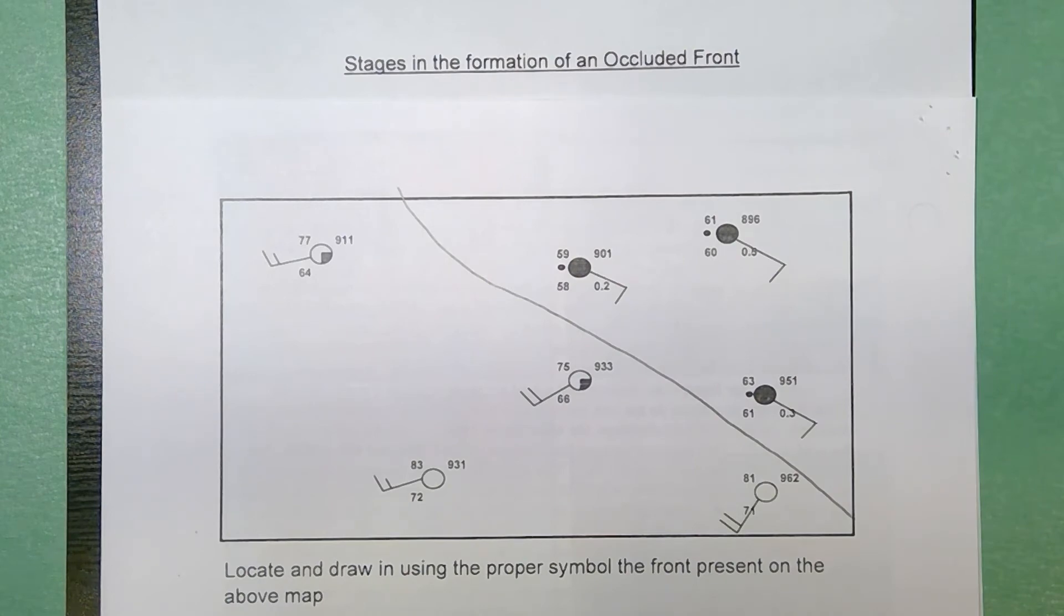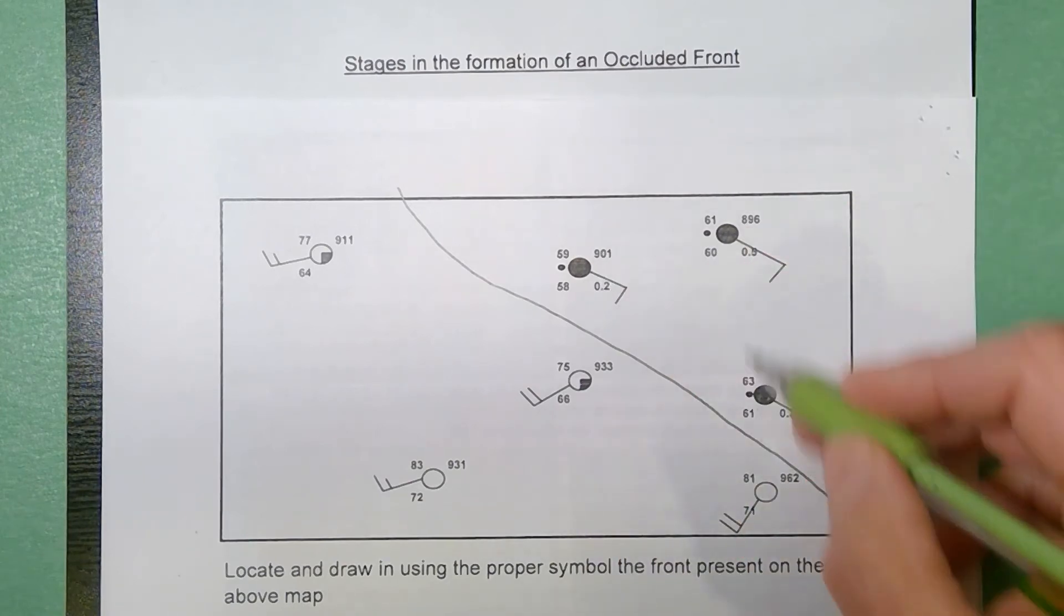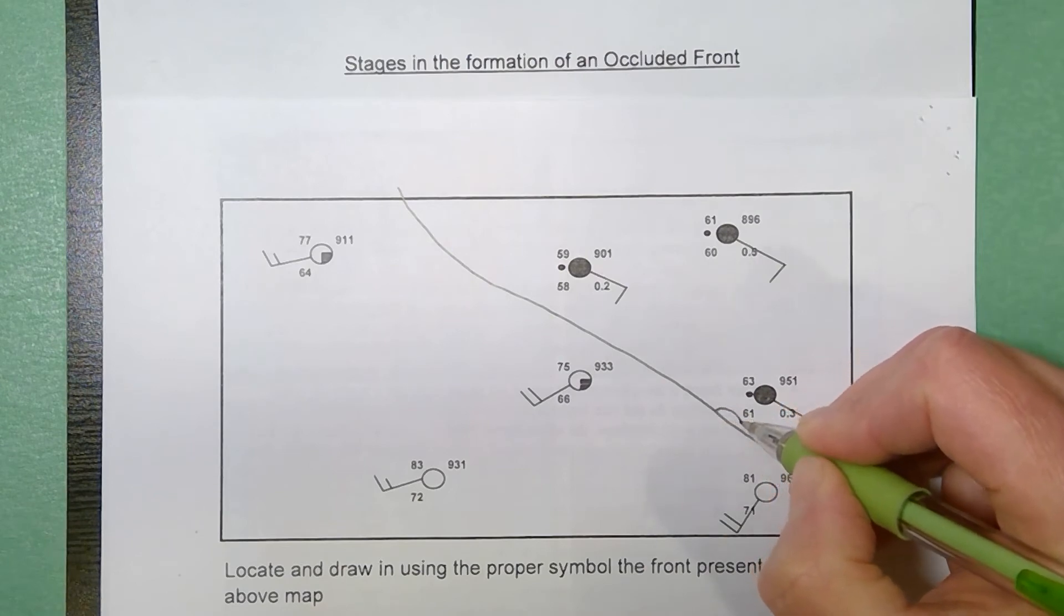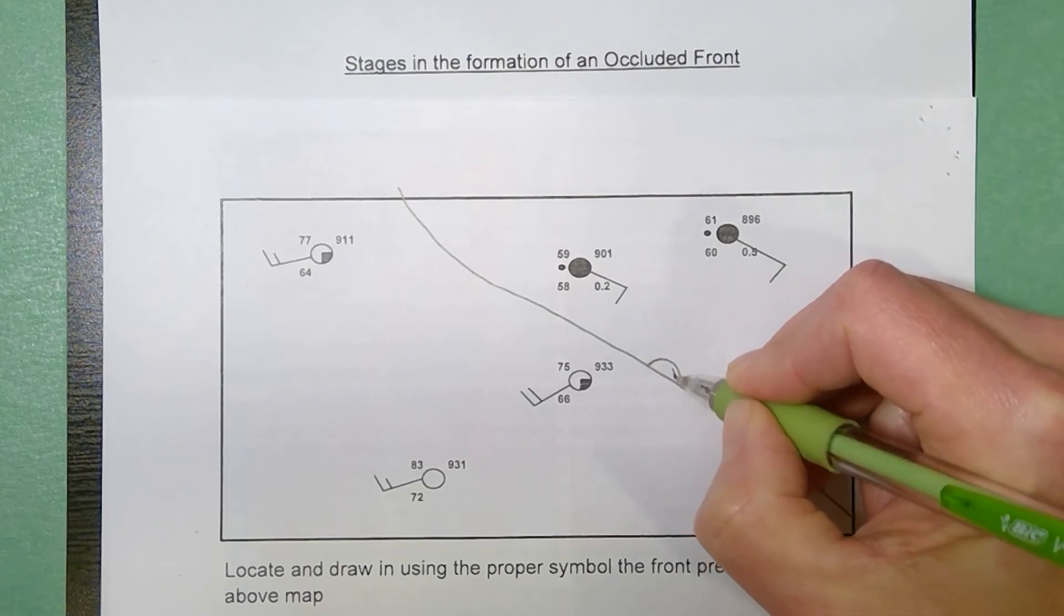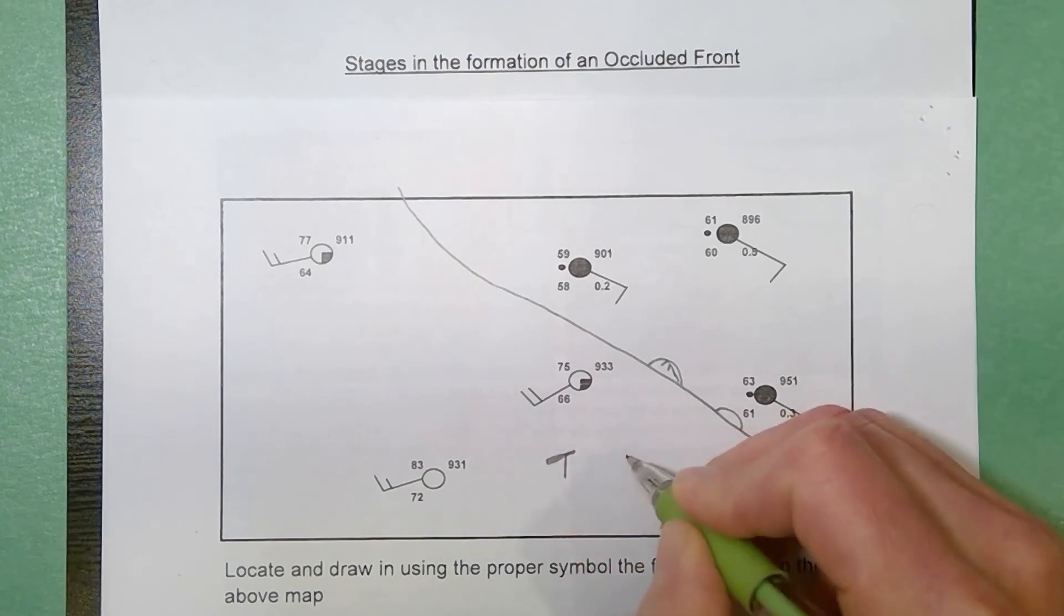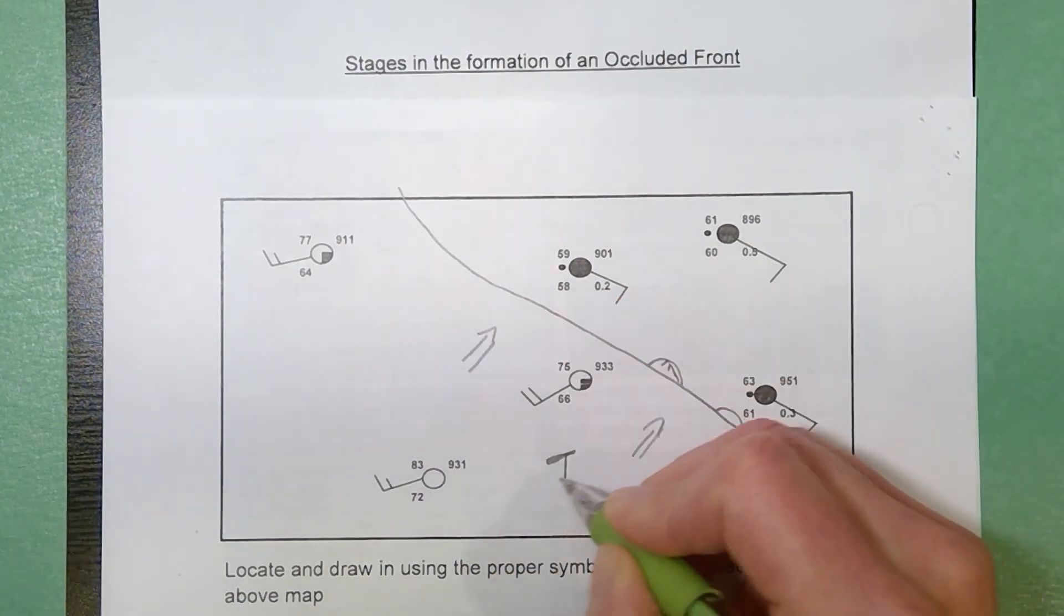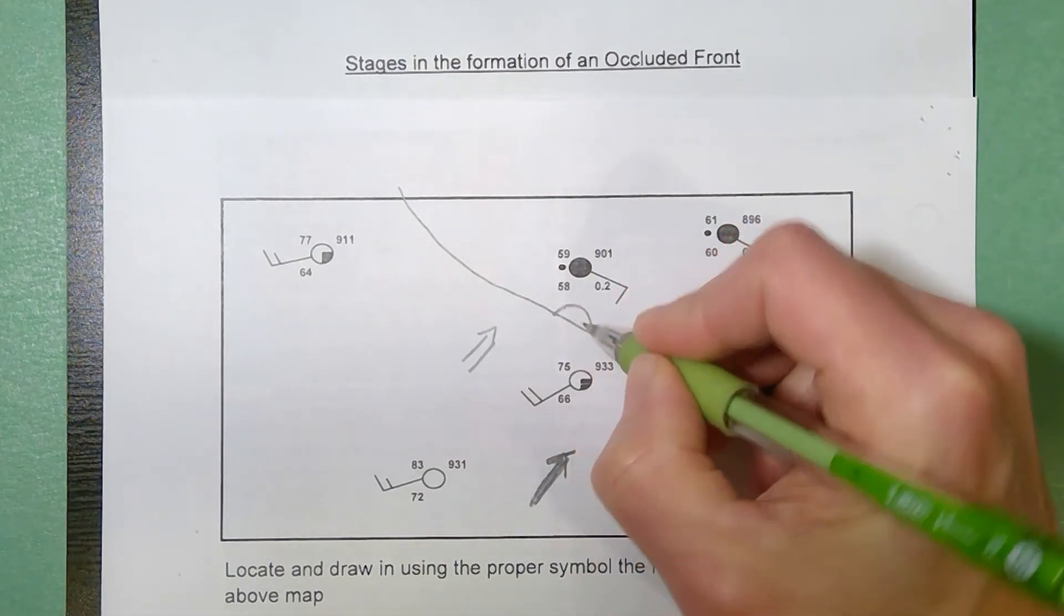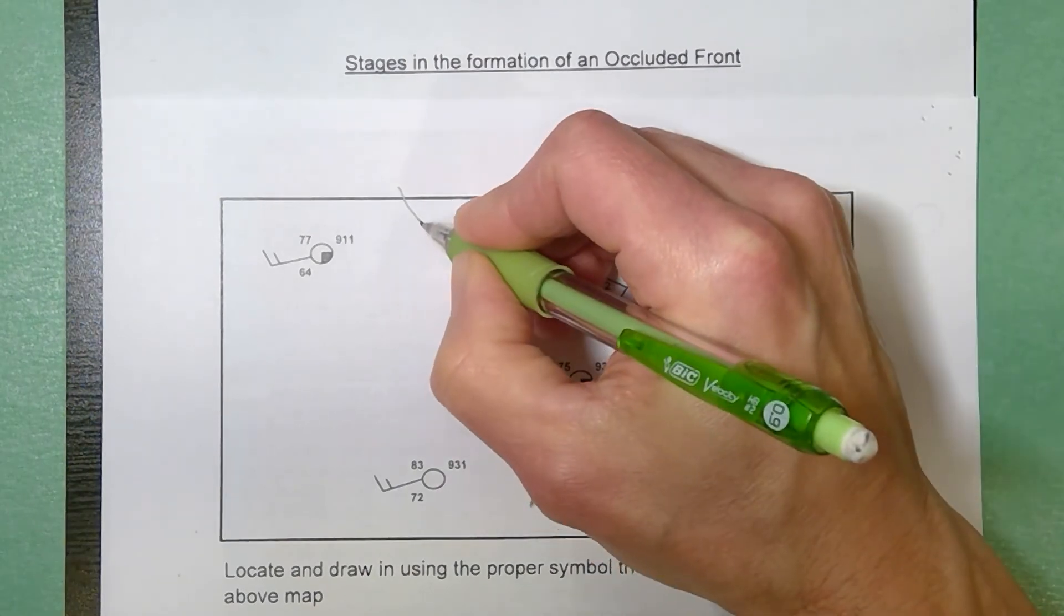So the question is, is this a warm front moving towards the northeast or is it a cold front moving towards the southwest? Just based on the wind directions, these winds are going to push that line to the northeast and the fact that all the clouds and the rain is on this side of the line should help you see that this is going to be a warm front moving to the northeast. So the tropical air on this side is pushing into the polar air on that side. So this should be a warm front moving in that direction.